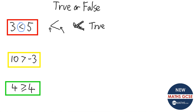The next one says 10 is greater than minus 3 — that is also true, 10 is bigger than minus 3. And the last one says 4 is greater than or equal to 4 — that is also true. That line at the bottom means it can be equal to it as well.